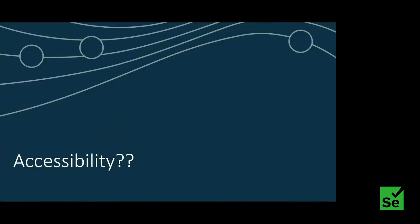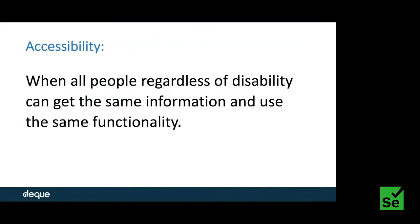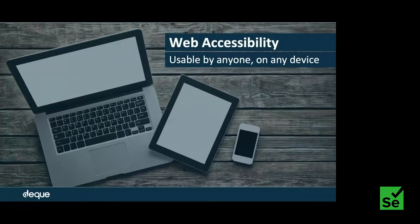Many of you might already know about accessibility, but let me take a minute to explain it. Accessibility is all about enabling people regardless of their disability so that they get the same information and use the same functionality on any device. Digital accessibility or web accessibility makes sure that all information is available for anyone, regardless of disability or ability, and on any device like desktop, mobile, and tablet.